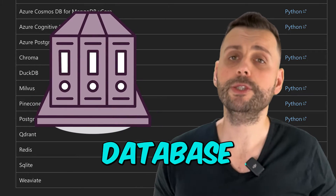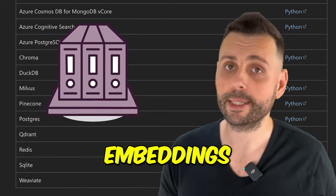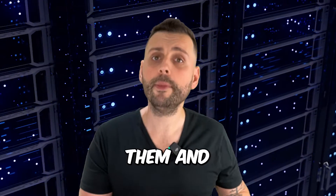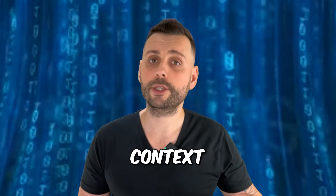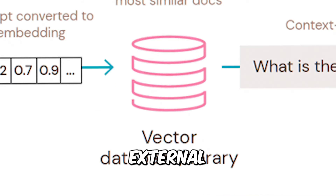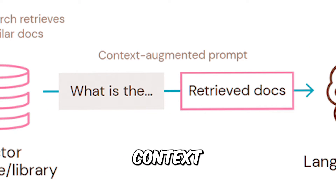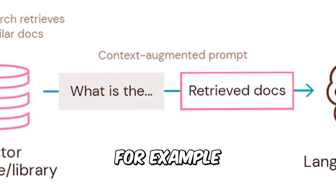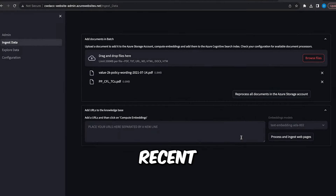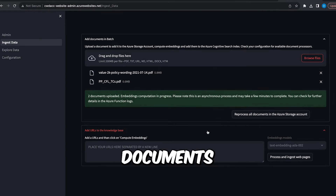For this, you're going to be using a vector database to store the embeddings, and the added cost is for computing them and for the increased context length per query. A RAG workflow pulls relevant information from external sources and injects it into the context provided to a model. You can use it, for example, in a question-answering use case where the answer comes from recent specific documents.